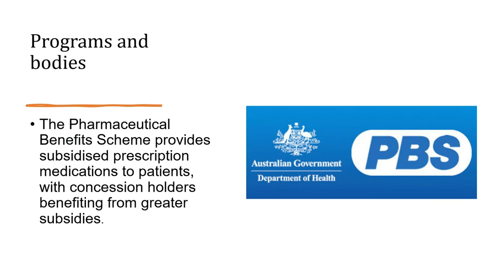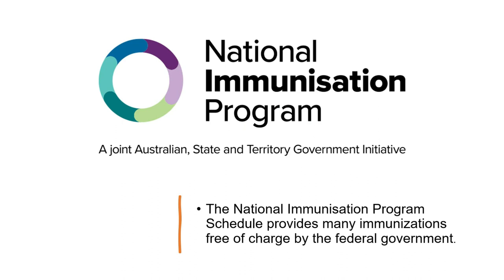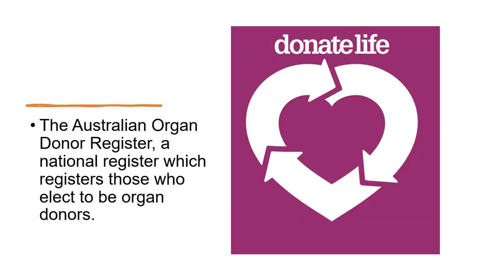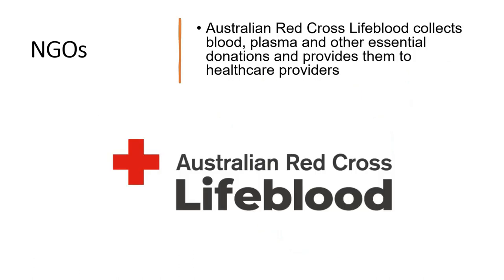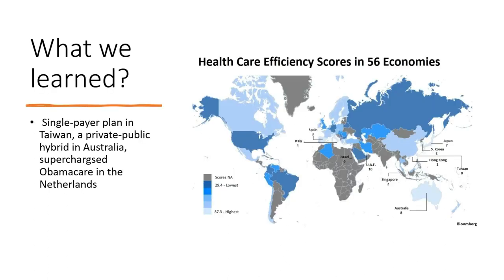The Pharmaceutical Benefit Scheme provides subsidized prescriptions, with concession holders benefiting from greater subsidies. The National Immunization Program Schedule provides many immunizations free of charge. The Australian Organ Donor Register is a national register for those who elect to be organ donors. Each state and territory is responsible for its own public hospitals and departments such as Queensland Health. The Australian Red Cross Lifeblood collects blood, plasma, and other essential donations for healthcare providers. In summary, Taiwan uses a single-payer plan, Australia uses a public-private hybrid, and the Netherlands uses a supercharged managed competition model.